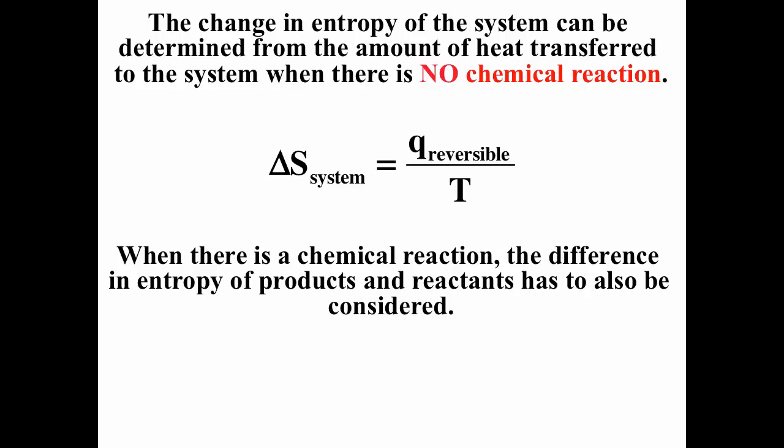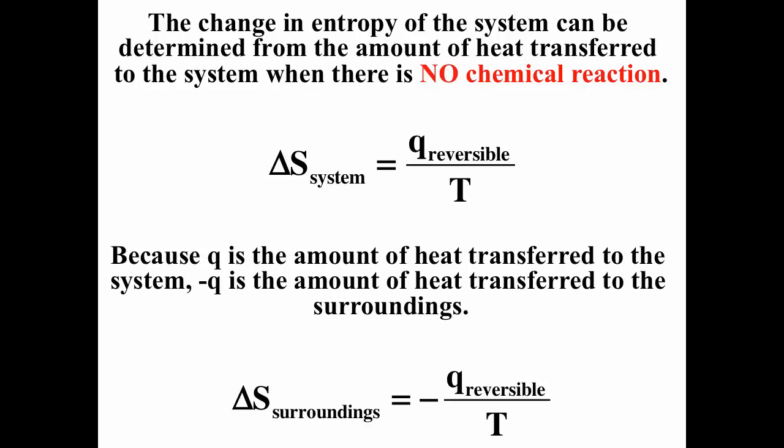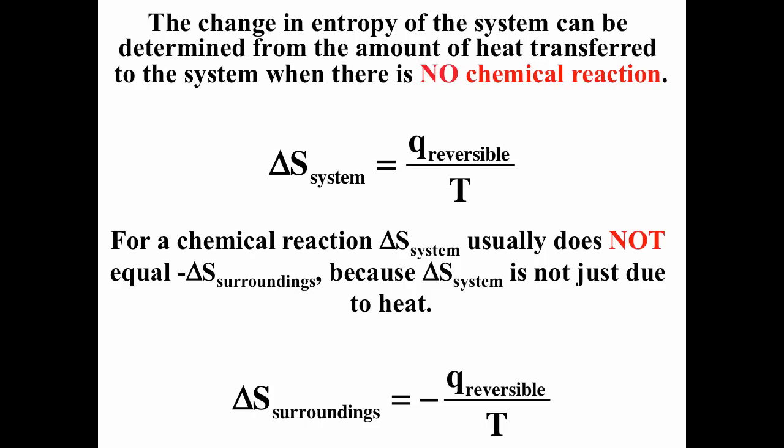If there is a chemical reaction, ΔS_system must be calculated as products minus reactants. For the surroundings, since q is defined as heat going from surroundings to the system, ΔS_surroundings = −q/T. ΔS_system does not usually equal −ΔS_surroundings because ΔS_system is not just affected by heat when a chemical reaction is involved.